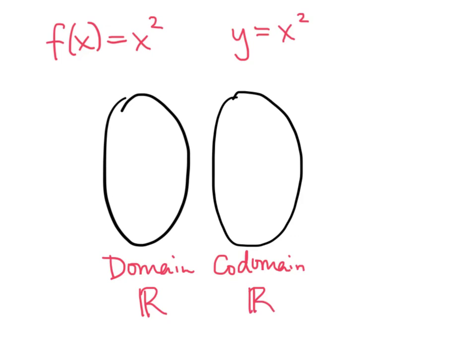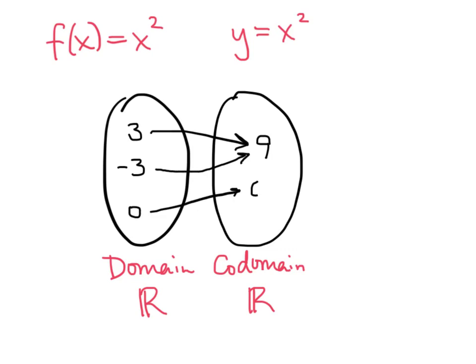There are lots of real numbers, but just to give some examples: plug in 3 and you get 9; plug in negative 3 and you also get 9; plug in 0 and you get 0; plug in the square root of 5 and when you square that you get 5. Obviously there are a lot more arrows on this diagram that haven't been drawn, but you get the idea of what the picture looks like.